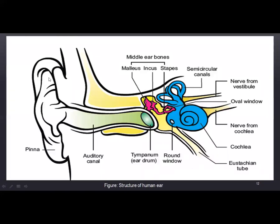To summarize the ear structure: the external ear consists of the pinna, auditory canal, and eardrum. The eardrum separates the external ear from the middle ear. In the middle ear, there are three bones — malleus, incus, and stapes — connected to the oval window. The oval window separates the middle ear from the inner ear. The inner ear has three parts: the vestibule in the center, the semicircular canals posteriorly, and the cochlea anteriorly.